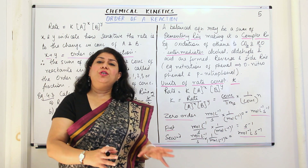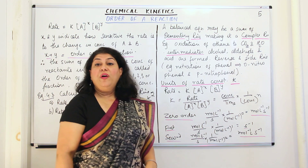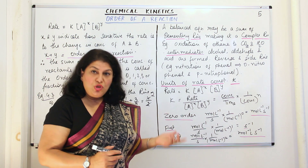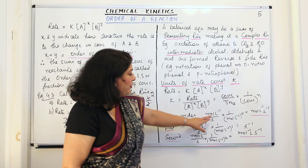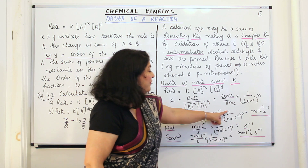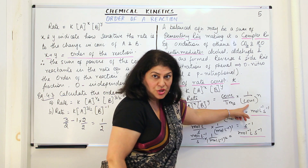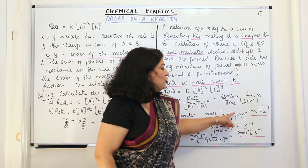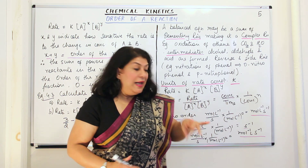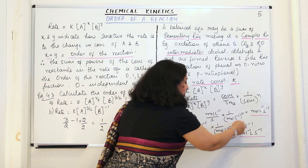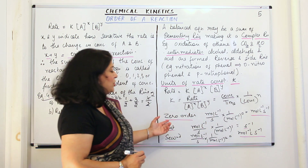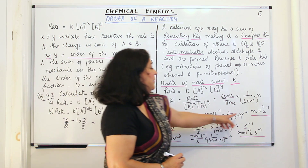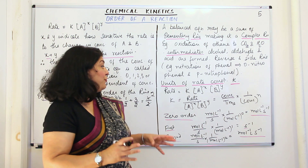For a zero-order reaction, the unit for K is: concentration per time, which is moles per liter per second, times one over concentration to the power of zero. Anything to the power of zero is one, so this denominator becomes one. Therefore the unit for a zero-order rate constant is moles per liter per second.